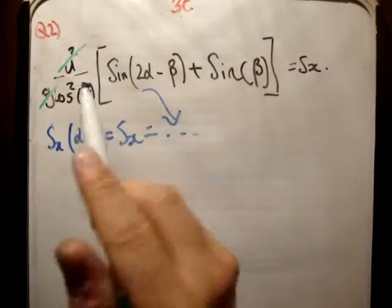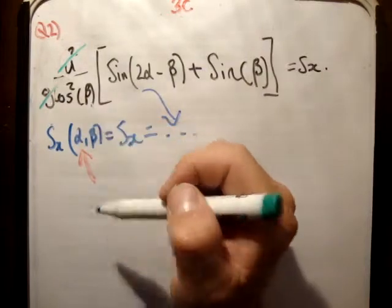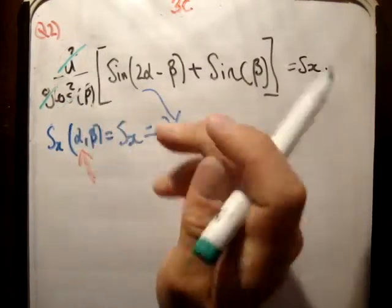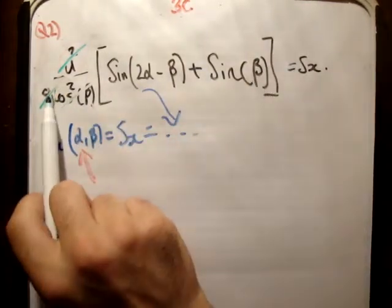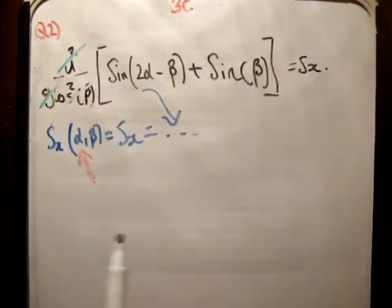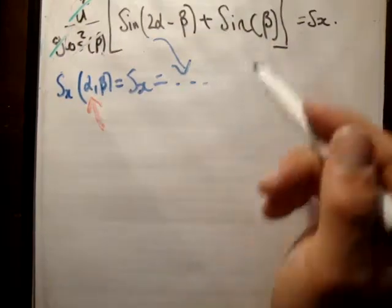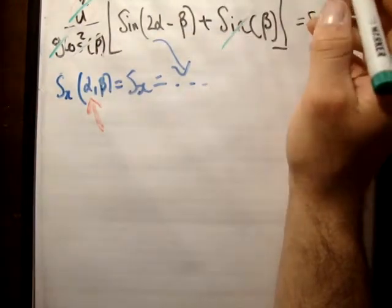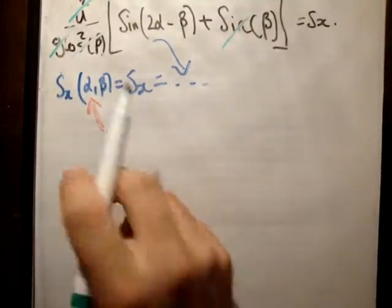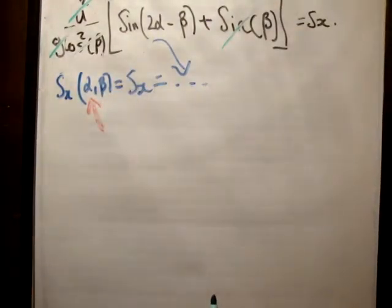Cos squared beta. We're not differentiating with respect to beta, so beta is also a constant. And because there was a multiplied here, you can just cancel them. However, and also then, sine beta, you can cancel that, because that's a constant.